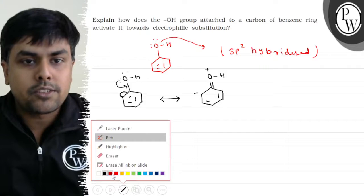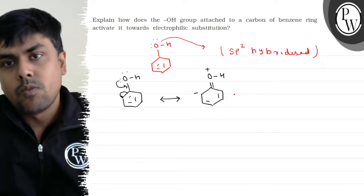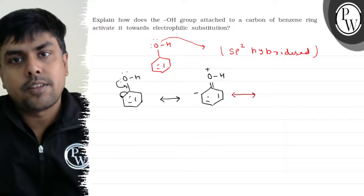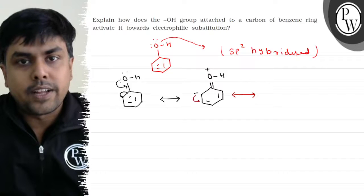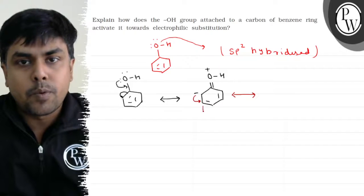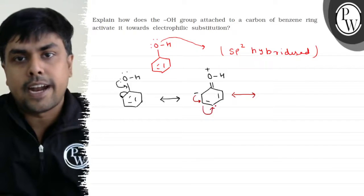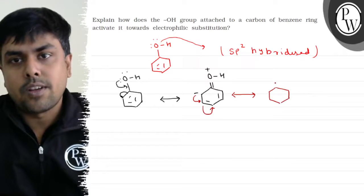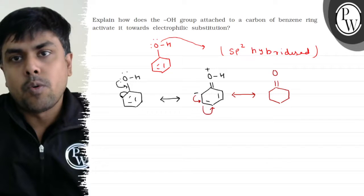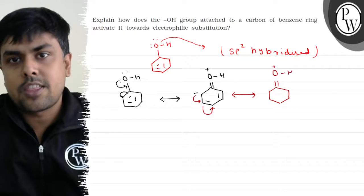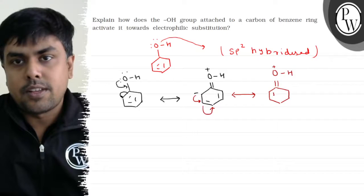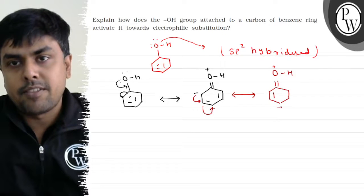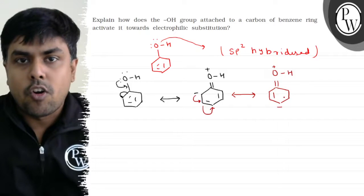And if I talk about the next resonating structure, how will it form? Let's see. This negative charge will get delocalized and your double bond will shift on the adjacent atom. Its resonating structure will be something like this. O has positive charge, H. This negative charge will form the double bond. Negative charge stays here.